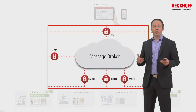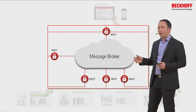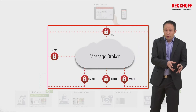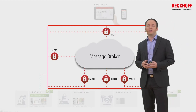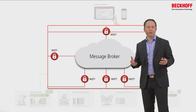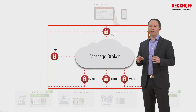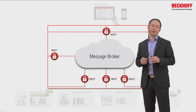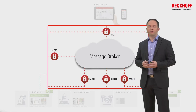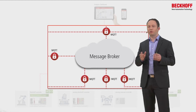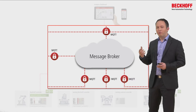For MQTT communication, we have a centralized message broker. The message broker is somewhere in the network and can be located at the local machine, in a machine line, or in a factory. Or it can be located in a cloud system on a virtual machine. The message broker is the central point that manages all message distribution, making communication very easy because every client just needs to know this message broker. So you see it is very flexible in infrastructure.